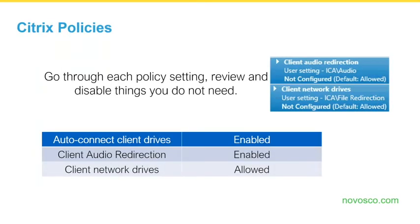As a general housekeeping tip for Citrix policies, you should always review them periodically — review what you don't need or do need. Throughout your career you may have deployed many versions of Citrix farms from 6.5 through 7.1, 7.6, 7.15, up to 7.17, and there are different policies for different operating systems and Citrix versions. People often create policies and forget about them, and after upgrades those policies may no longer be needed. A good practice is to go through your Citrix policies at least every six months, do a review, and clean up what's no longer necessary.